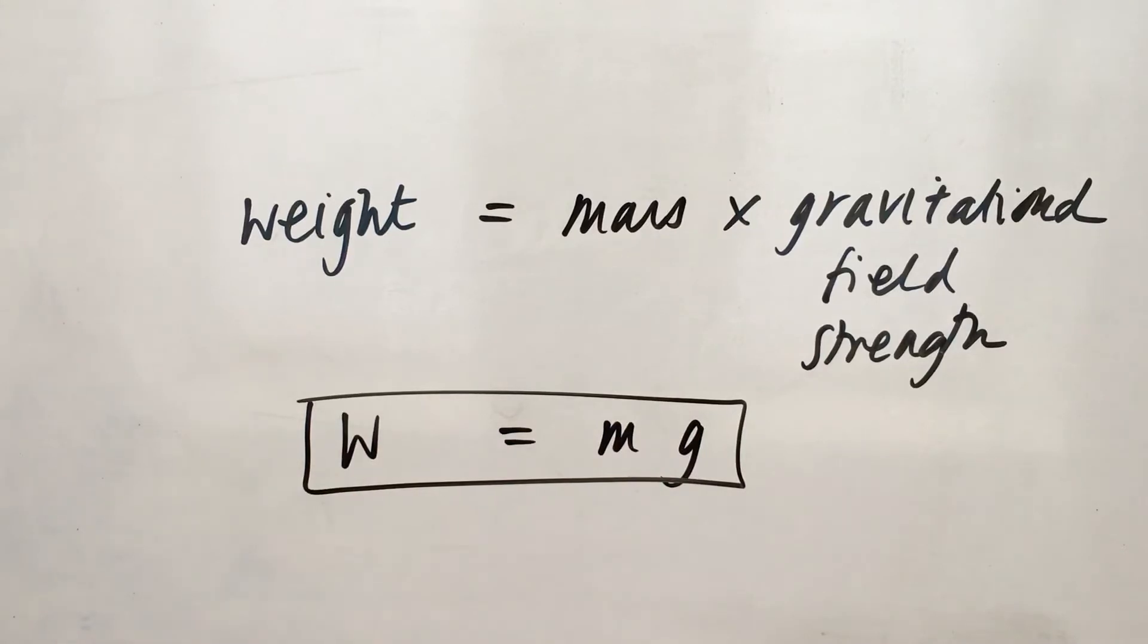This is how I remember it. W equals MG. I don't remember the word equations for things. Just remember the symbol equations.